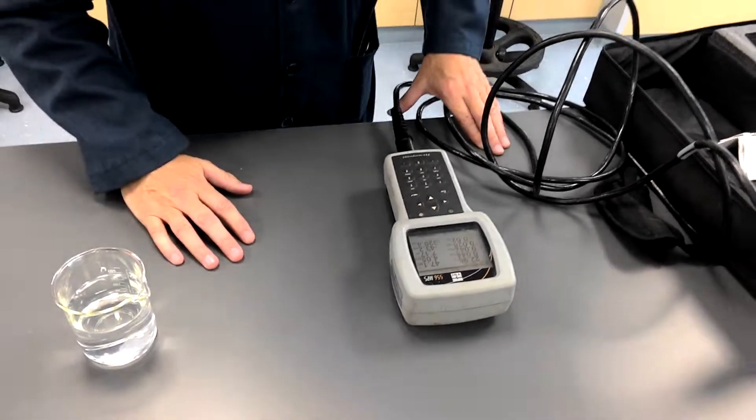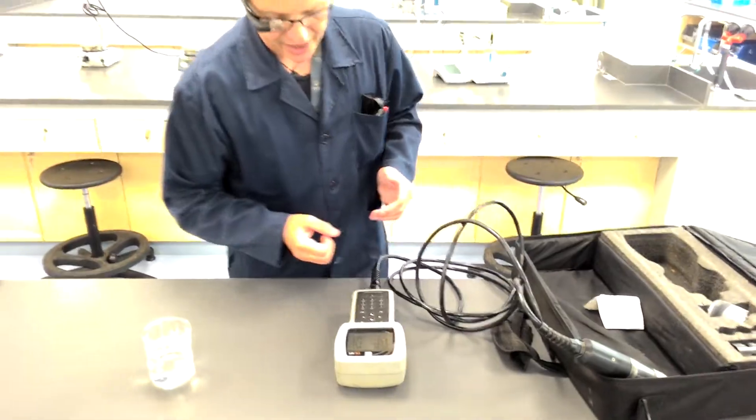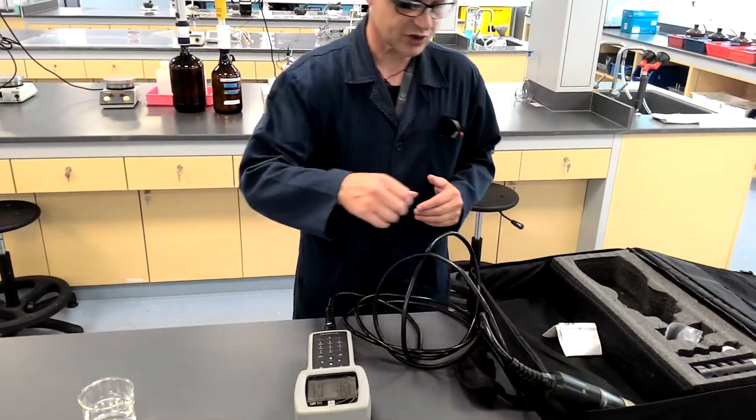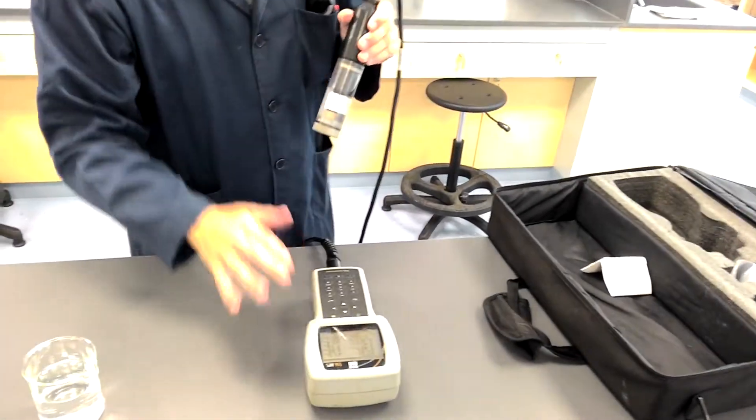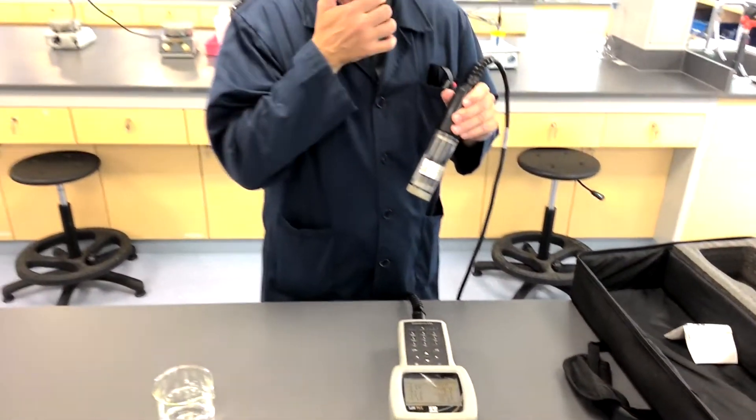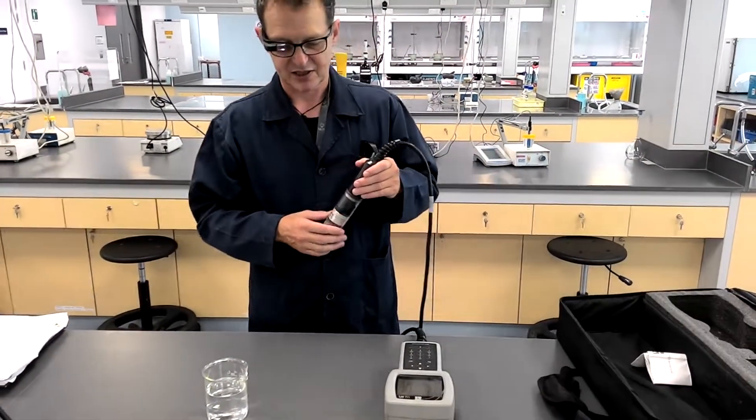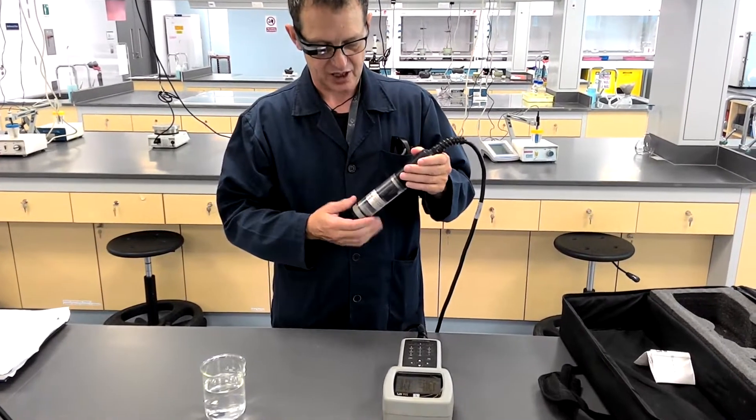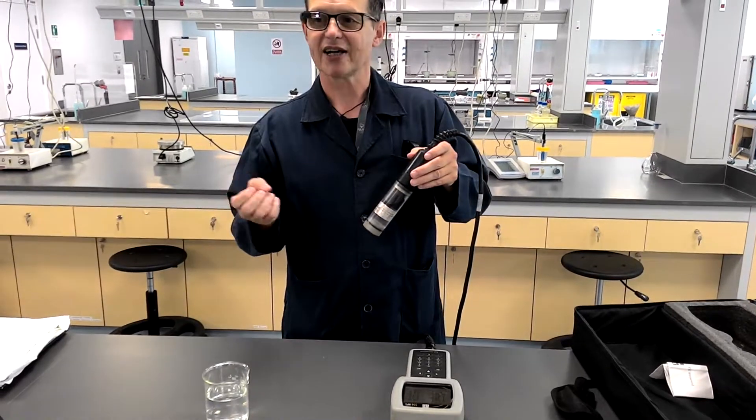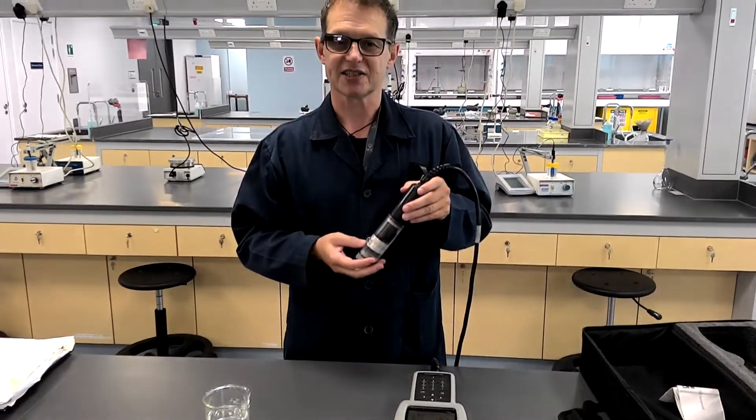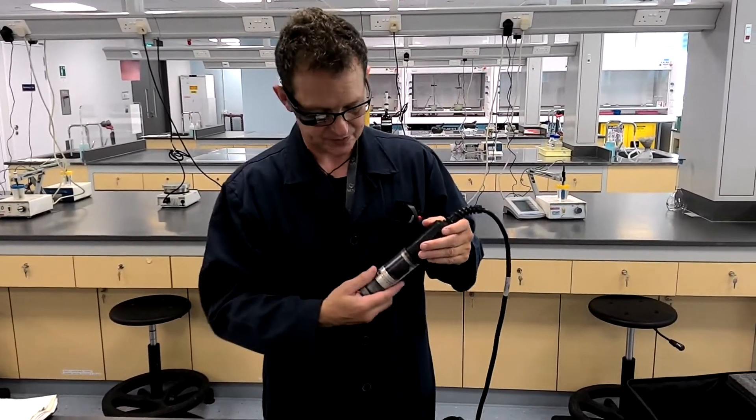It usually takes a few moments and then it will display the temperature and the dissolved oxygen concentration. Now, the calibrations are already in this meter and what's usually done is they are calibrated beforehand. And then the calibration, unlike something like pH maybe, will tend to stay. If we were measuring pH, you would calibrate before every measurement.